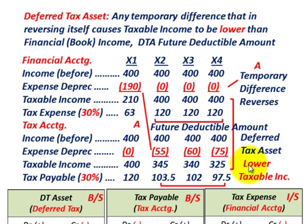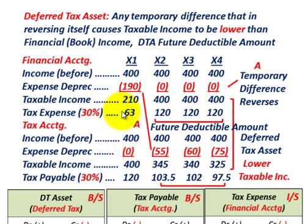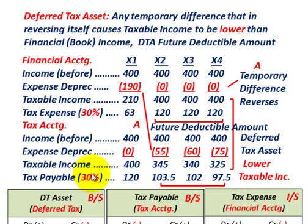A deferred tax asset means you'll have lower taxable income when this temporary difference reverses itself. Keep these terms separate: for financial accounting, it's called tax expense; for tax accounting, it's called tax payable. That's an important distinction.